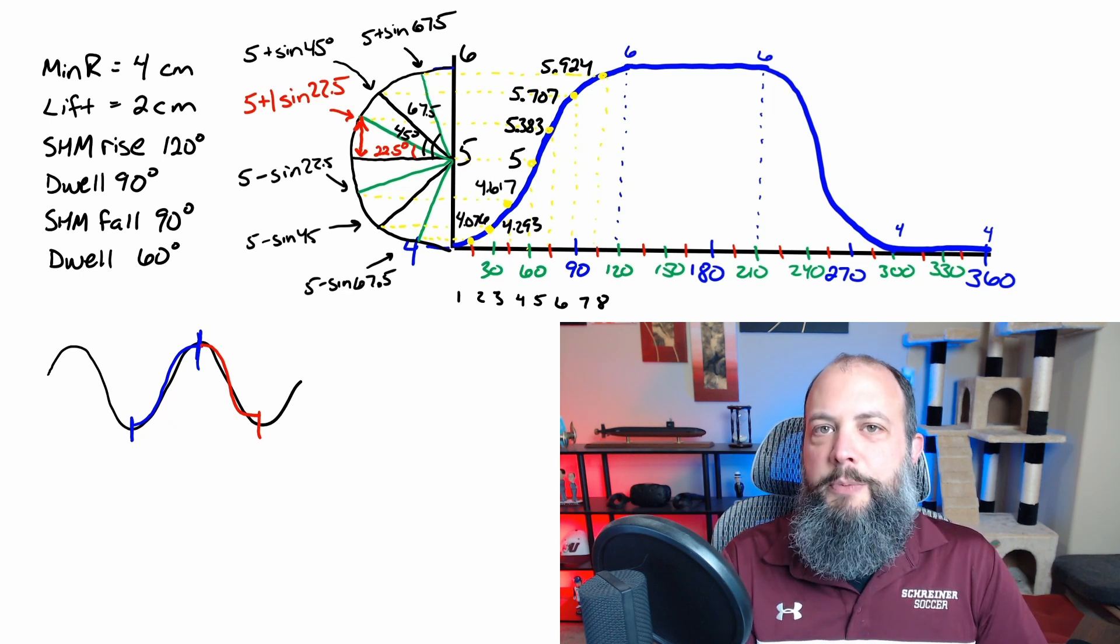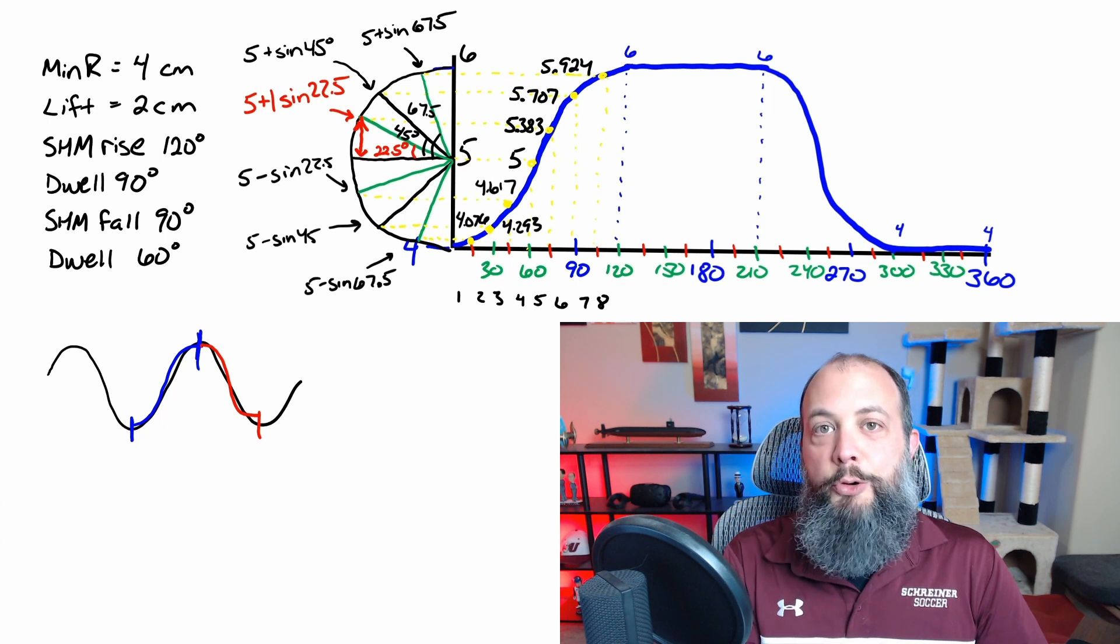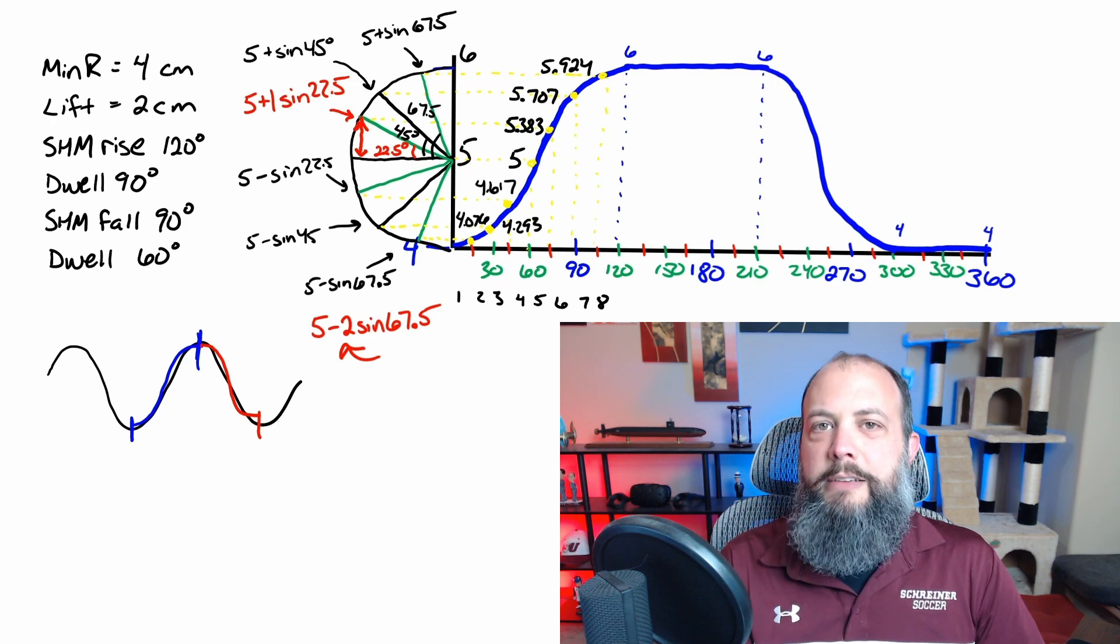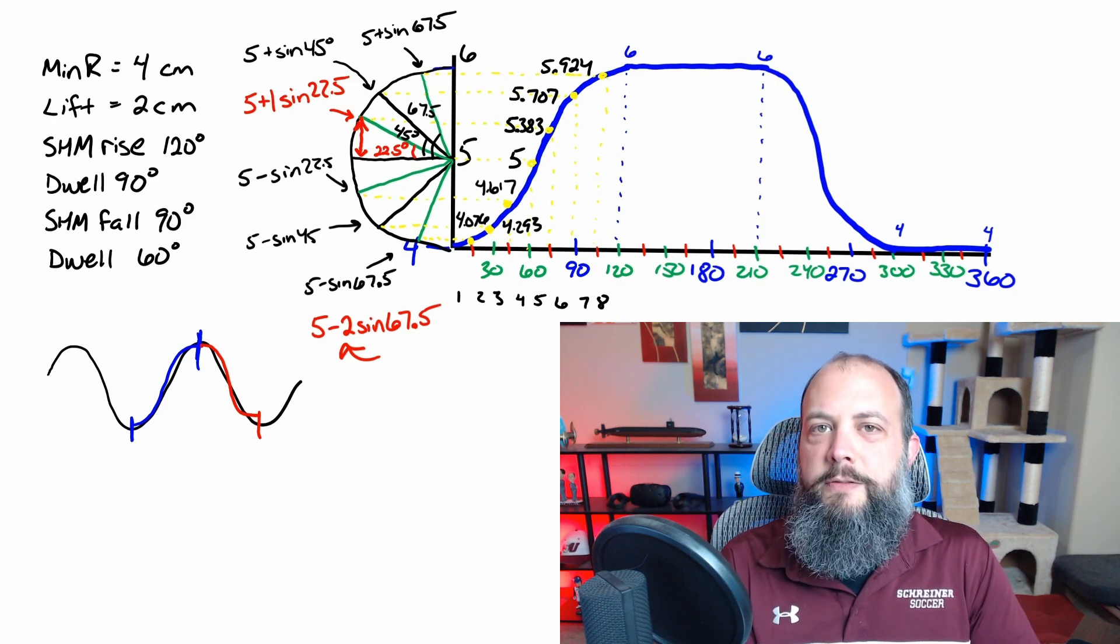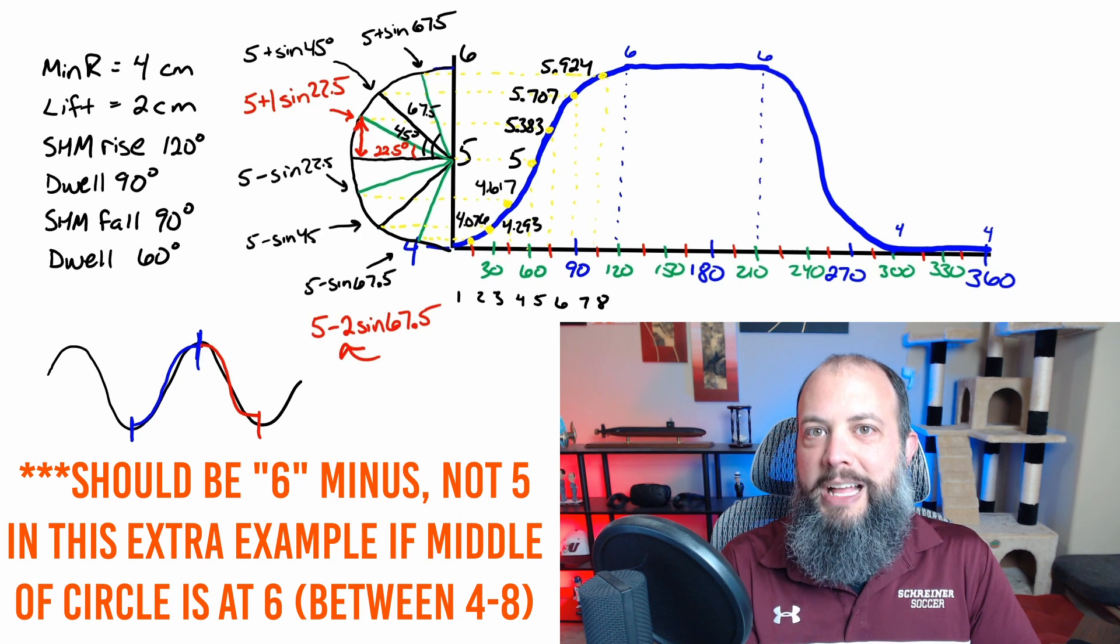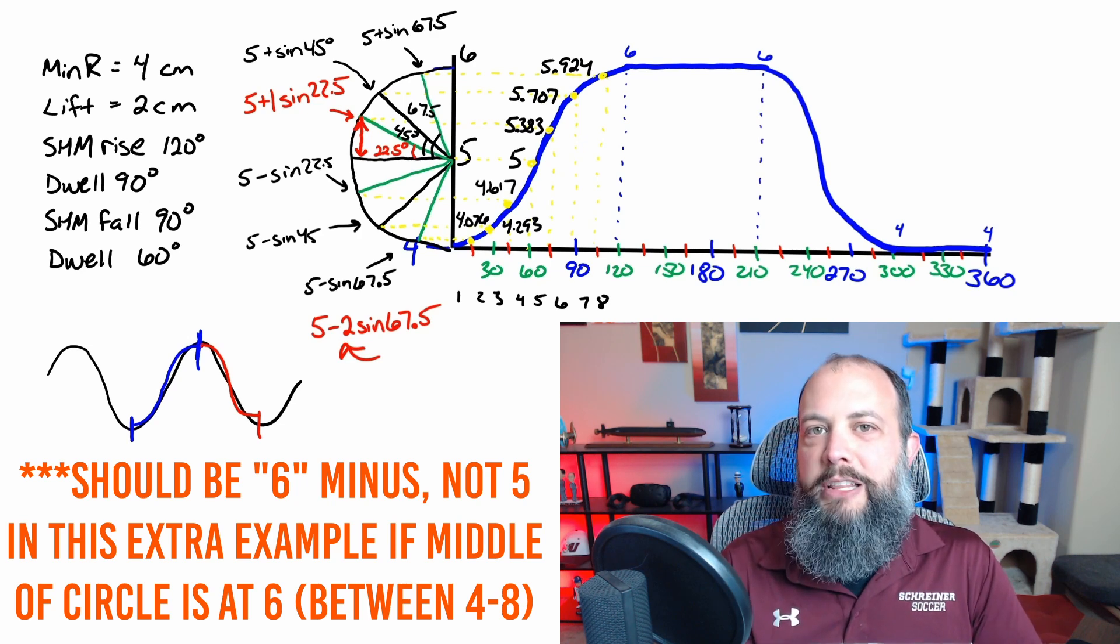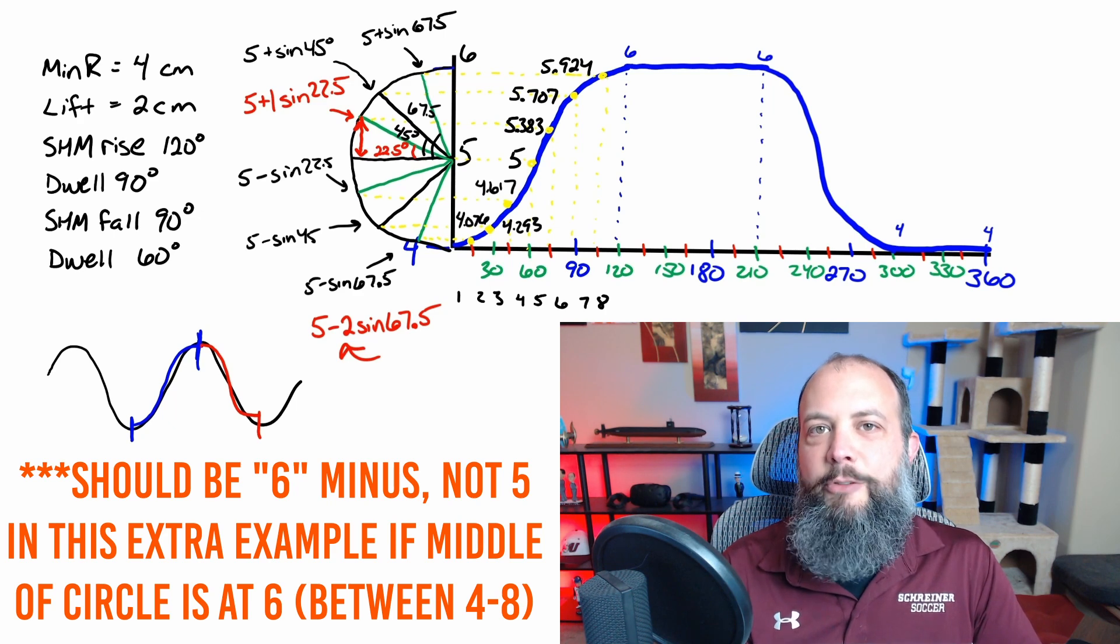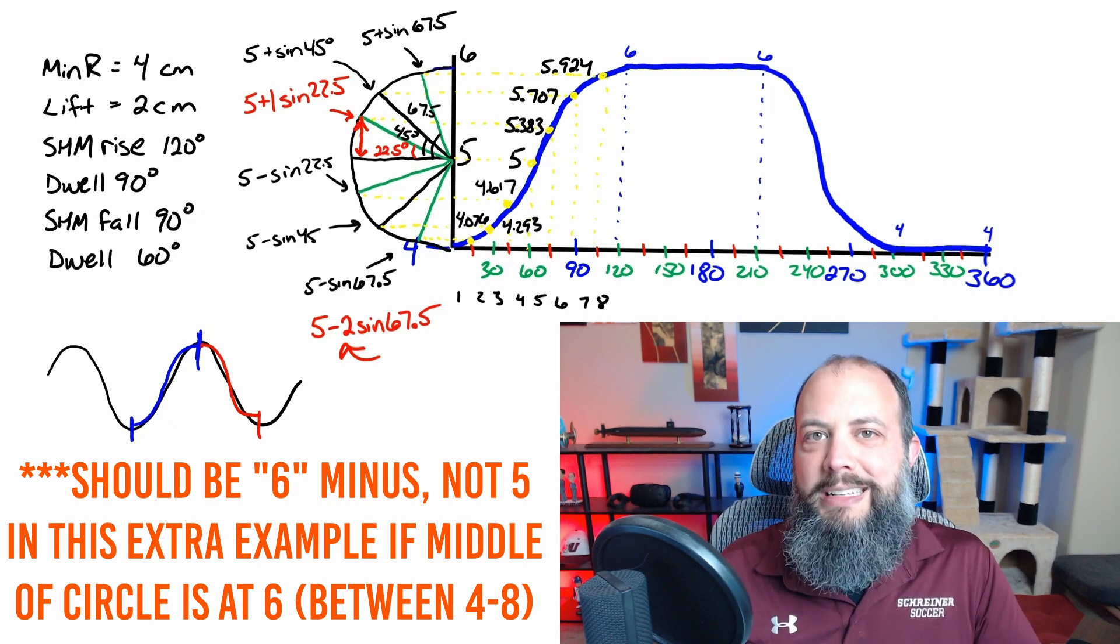But as a last reminder, keep in mind that the diameter of that circle was 2, which meant that the radius was 1. If the radius of that circle were different, if it were 2, like if we were going from a minimum radius of 4 up through a lift of 4 to a maximum radius of 8, then that would make the radius of this circular guide 2. And in order to find this lowest point, it would be 5 minus 2 times sine of 67.5 degrees. So we have to insert the radius at that location.